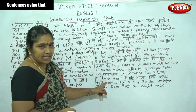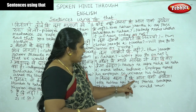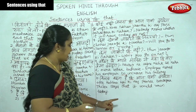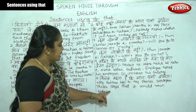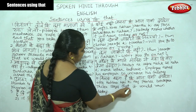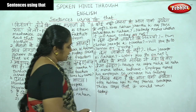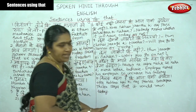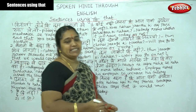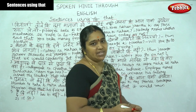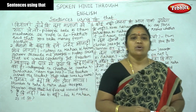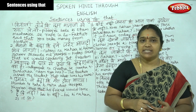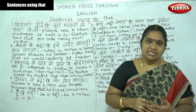Tilak kahata hai ki aaj paani barasega — Tilak says that it would rain today. By seeing these sentences, we know how we are using 'ki' in these types of sentences.